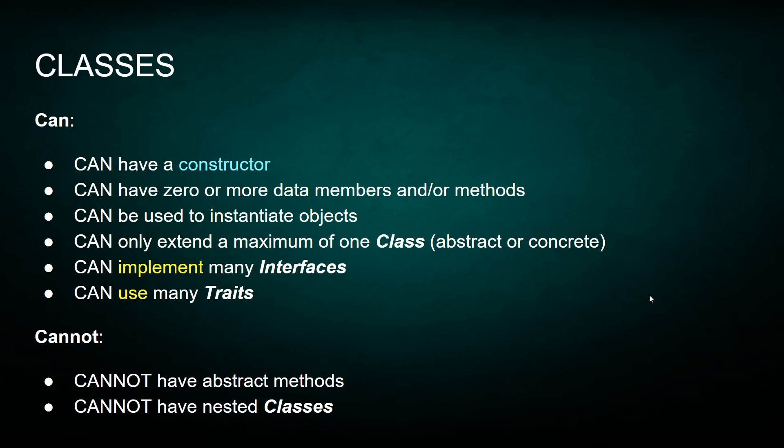So here are the classes. The list I have here may be incomplete, but at least it has most of the important features in these components. A class can have a constructor, and it is actually the only one that can be used to instantiate objects. You can have zero or more data members and/or functions — we call these functions methods. It can only extend a maximum of one class, whether that class is an abstract class or a concrete class.